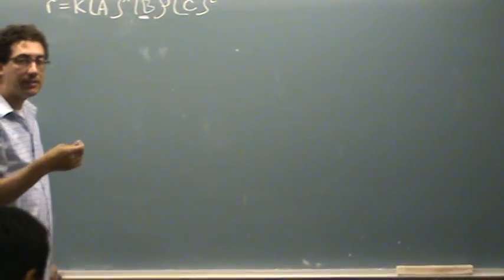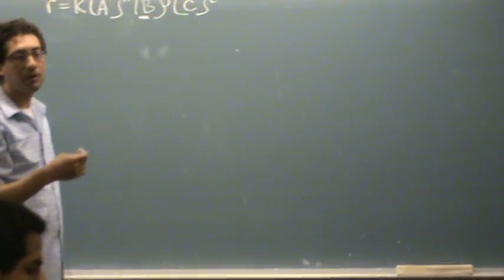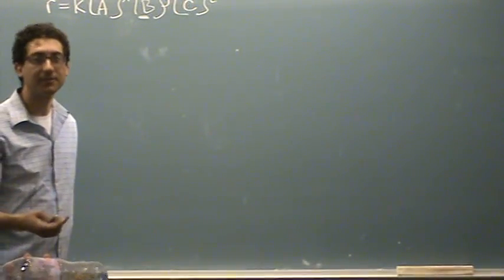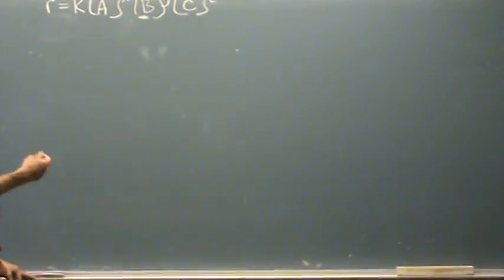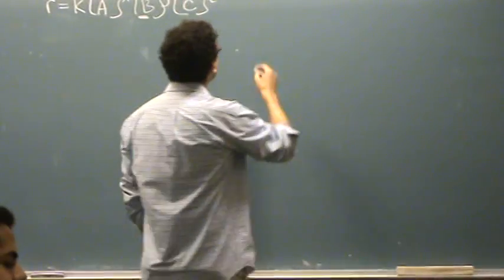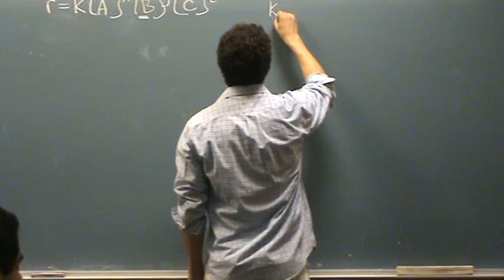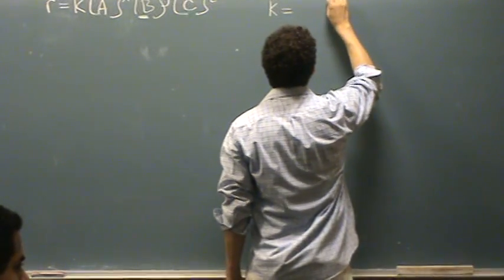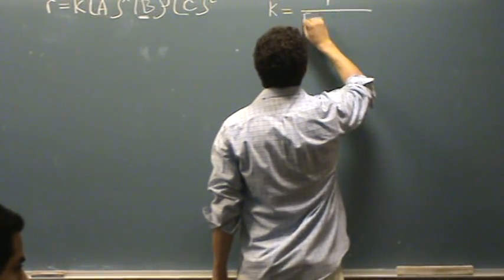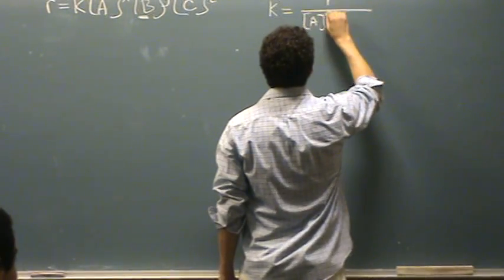To find units, the units of K will always differ. The order is always going to have the same units, nothing, so no units for the order. But K will always differ. So to find the units of K, basically solve for it - it's the rate divided by each of the concentrations.